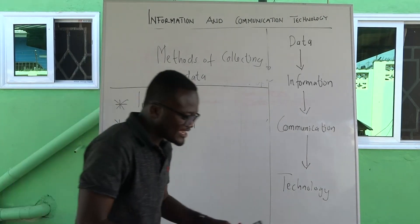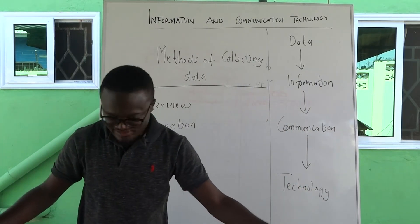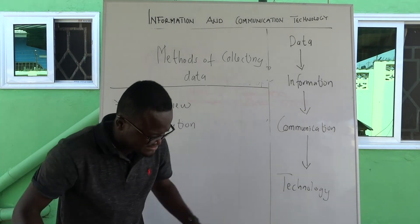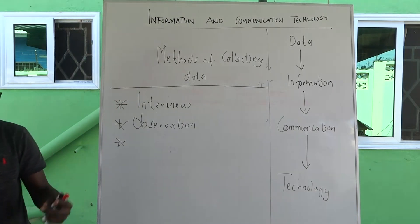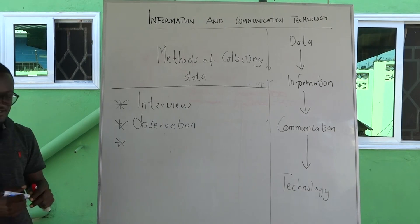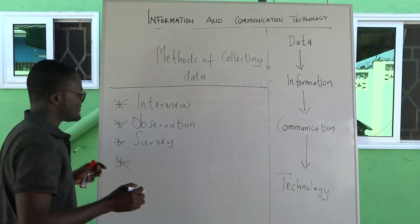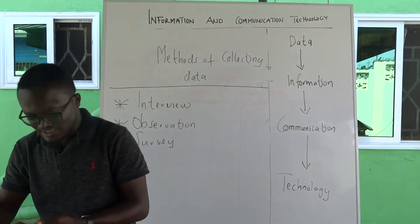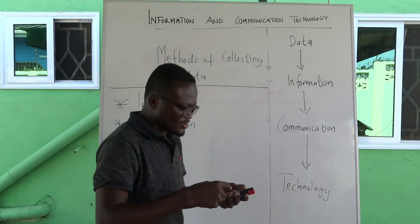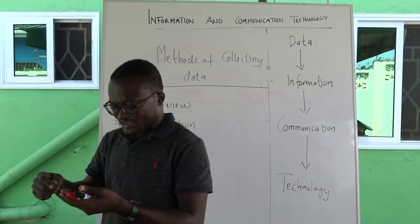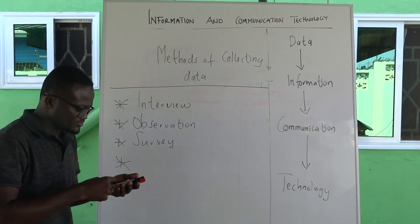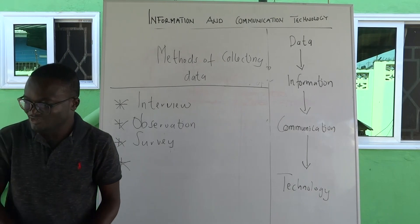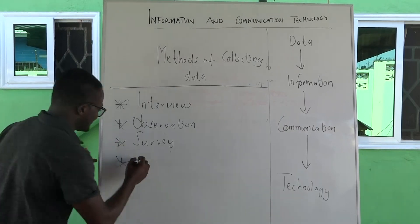The third method: when the policeman measures the distance from the dead body to where the blood is, determining from which direction the gunshot came — that is what you call surveying. So the third method of collecting data is survey. The last method is when the policeman comes with a sheet of paper and asks you structured questions — 'Were you here when the incident happened? What were you doing? Where did you go after?' — and records your answers. That method of collecting data using a sheet of paper with questions is called a questionnaire.